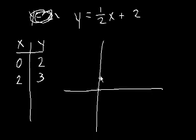0 comma 2, so that's on there. And then 2 comma 3, so it's there. So the line is going to look something like this.